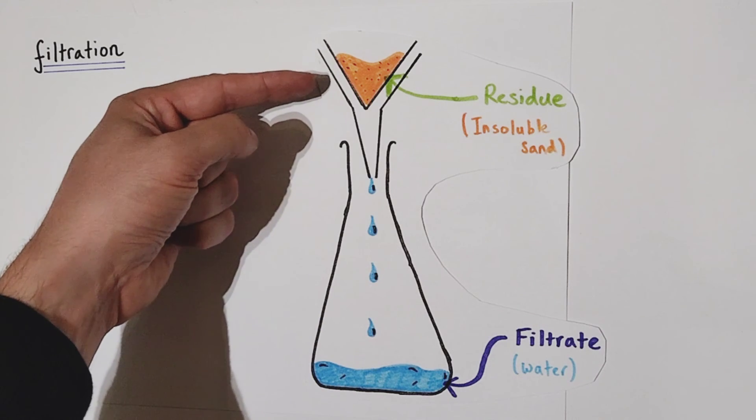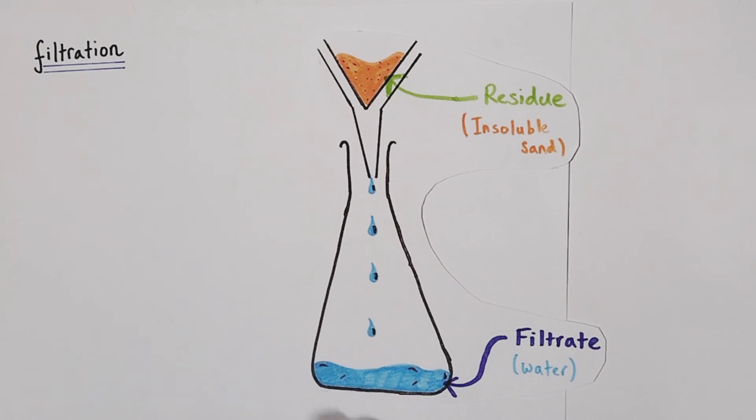So we have our residue, the insoluble solid left behind on the filter paper and our filtrate, the now separated liquid, present in the conical flask. And that is how filtration works.